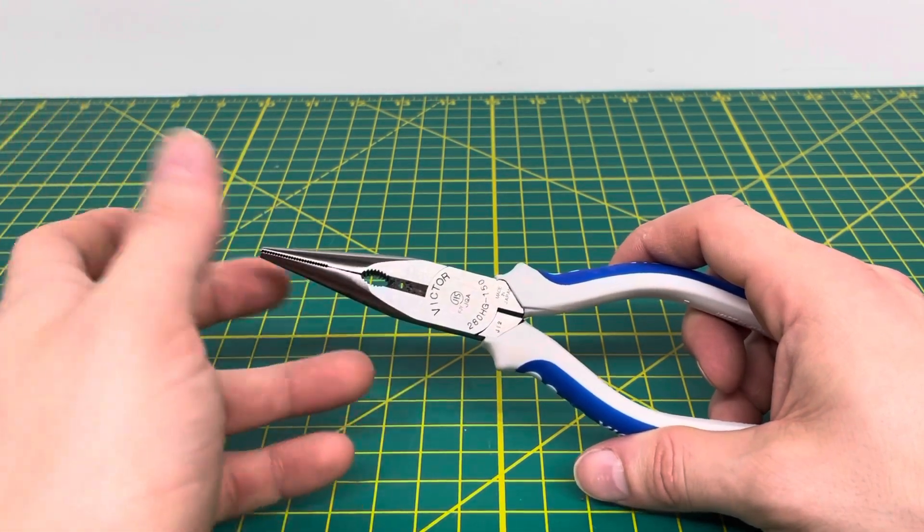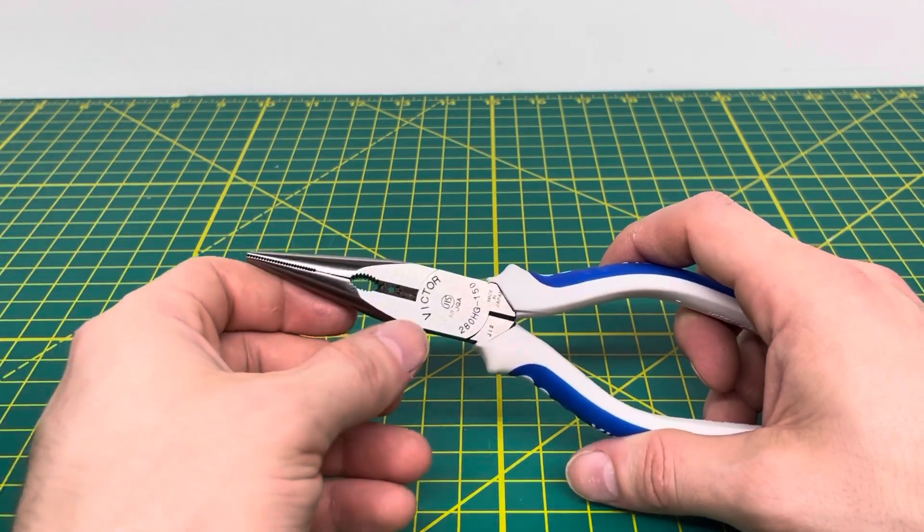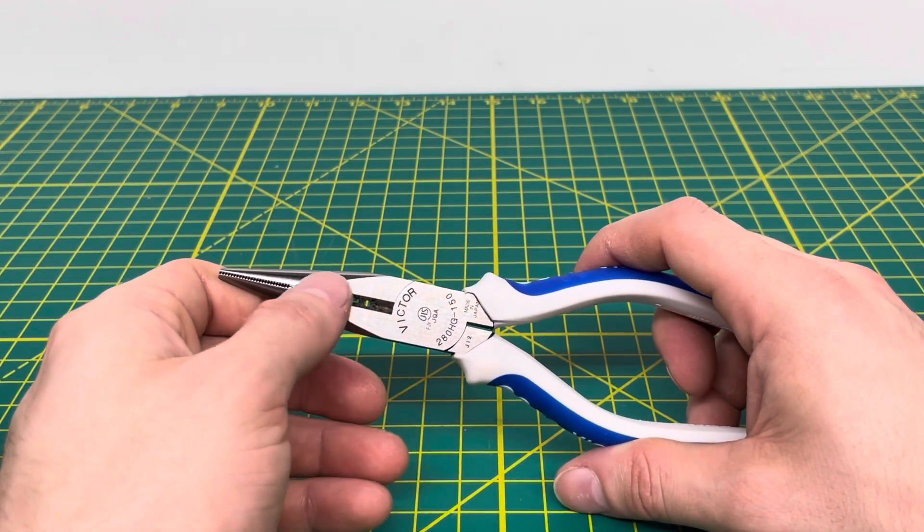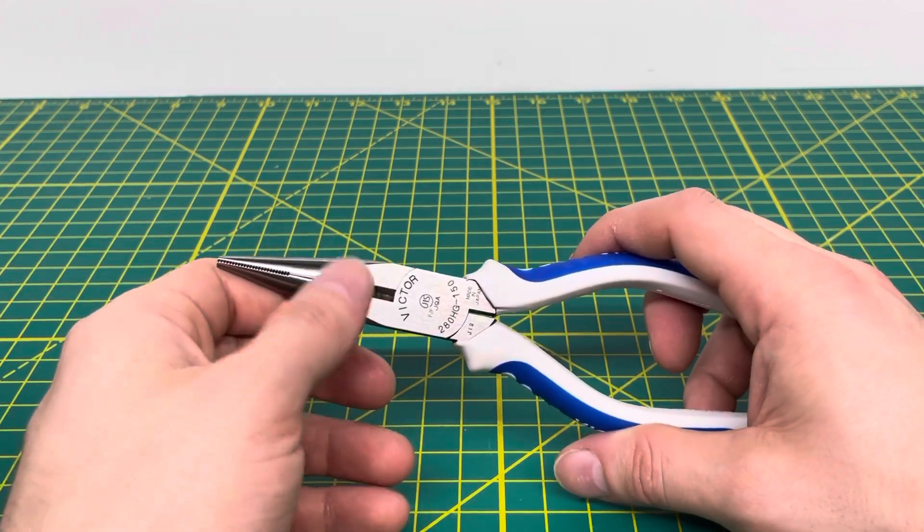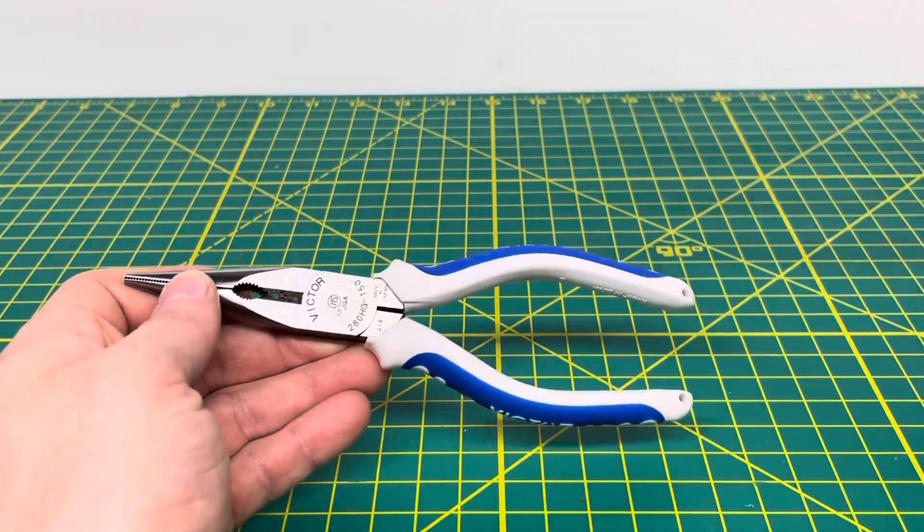Now, I will say the Amazon ad for this tool is kind of misleading. I didn't realize this tool came with a wire stripper when I was buying it, because when I went to go look at the tool, it just showed the cutter in the opening, and that was it. It didn't show the wire stripper, so that was kind of a surprise when I got it.